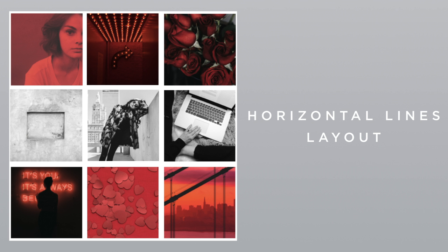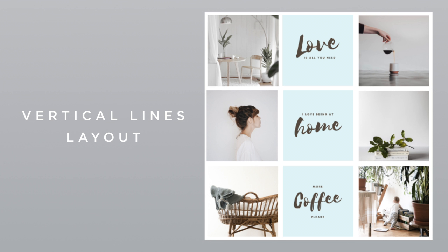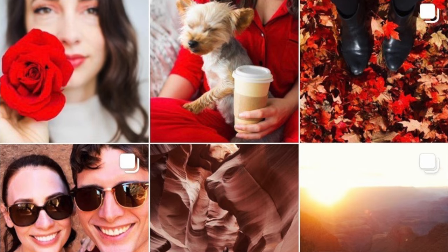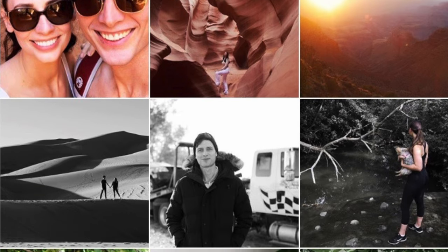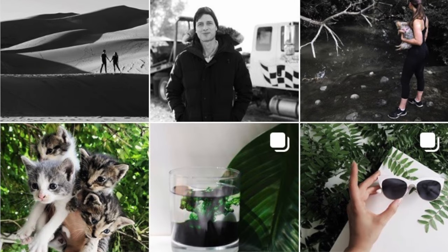Or you might want to play with a feed that has horizontal lines or vertical lines. To do either of these layouts, you'll need at least two distinct post styles, but of course you could do more. You'll need to use a feed planning app like Planoly or Unum to drop your photos in and rearrange them to create a style with either vertical lines or horizontal lines. At the moment on my Instagram feed, I'm playing around with the horizontal lines aesthetic combined with the rotating color theme — it's a little bit complicated, but I wanted to give it a try.